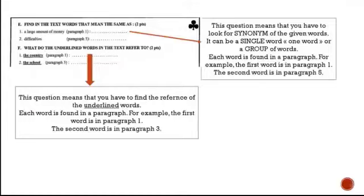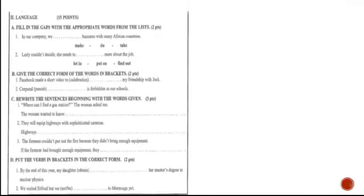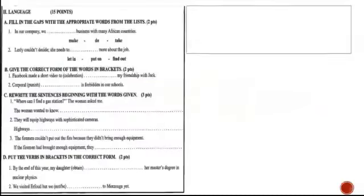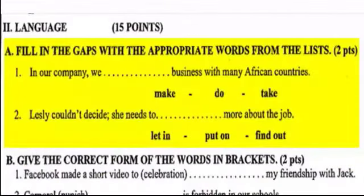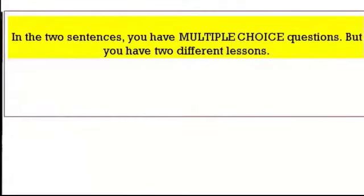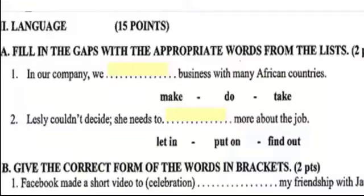Now we move to the second part: the language section, worth 15 points. In the language section, question A presents two sentences with what we call multiple choice questions, because you have two different lessons to consider.